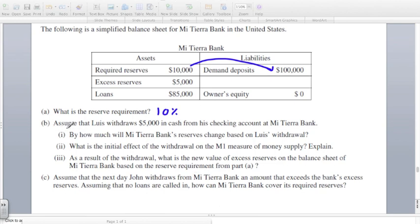Letter B says, assume that Lewis withdraws $5,000 in cash from his checking account at Mt. Tierra Bank. By how much will Mt. Tierra Bank's reserves change based on Lewis' withdrawal? Well, if he takes $5,000 out,